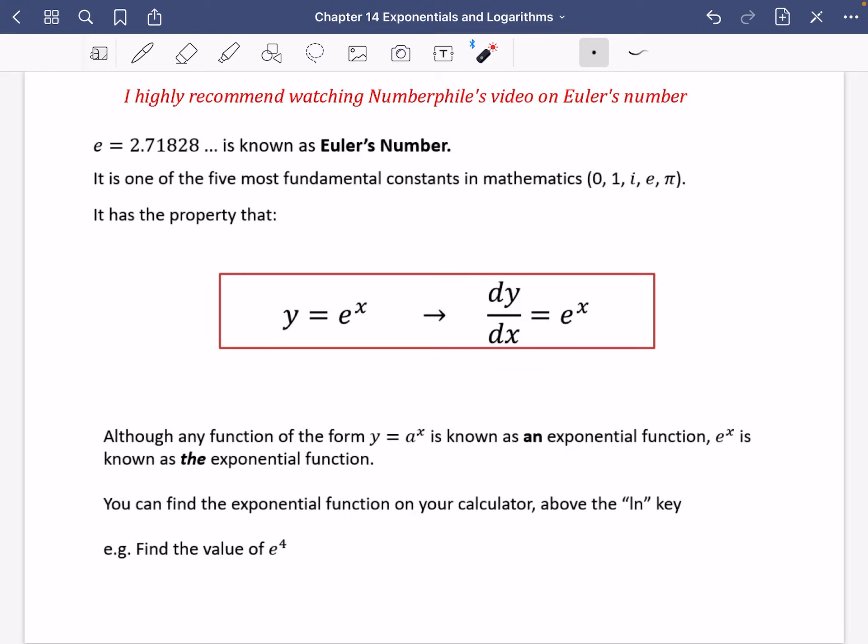So the special property we're going to be using about Euler's number here is that if y = e^x, when you find its gradient function, when you differentiate it, it equals e^x. It differentiates to itself. So although any function of the form y = a^x is known as an exponential function, e^x is known as the exponential function. So when we talk about the exponential function, we're talking about e^x, which is essentially saying 2.71828... to the power of x. But we just simplify that as e^x. We say it as Euler's number.